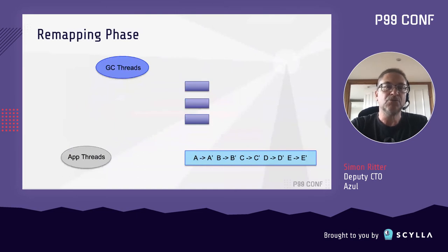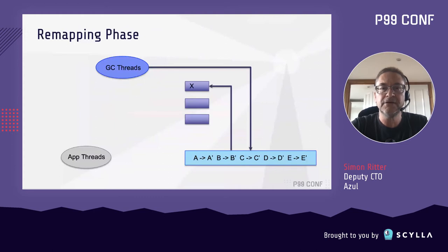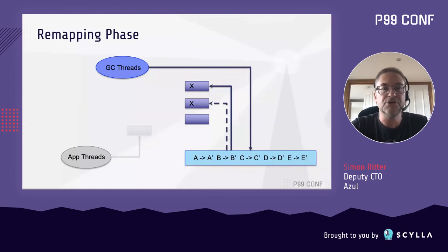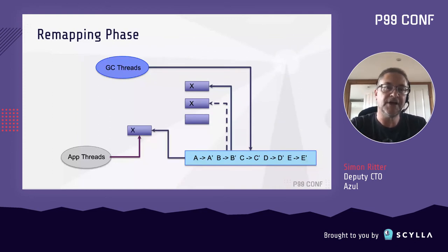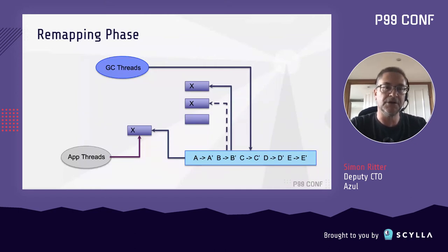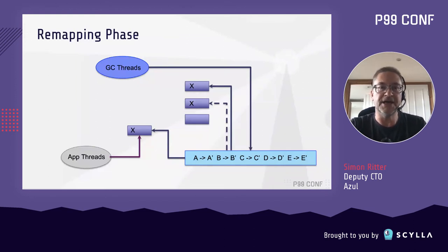Then we move to the remapping phase, where we need to update the object headers to reflect the fact that we've relocated those objects. The garbage collection threads will work their way through the side table, updating the object references and then setting the bit to indicate that work has been done. We decompose that into multiple threads and have it handled as quickly as possible. The application threads are still doing their work, so at some point we access an object, we do our test, that fails, we jump to a handler. The handler will then take the information from the side table, update the reference, set the bit and then pass that to the application thread — guaranteeing that we always get the right position for the object and can update it without losing any changes.